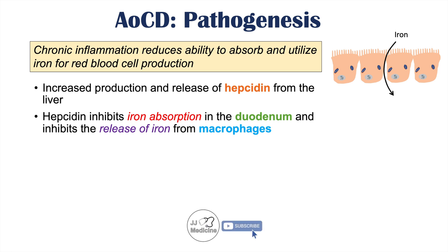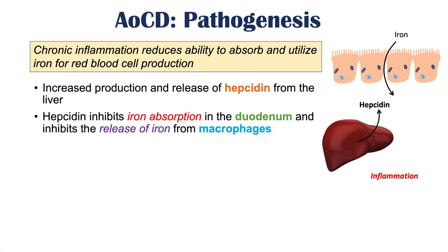Normally, iron is absorbed by enterocytes and brought into the blood. The liver produces hepcidin to regulate iron absorption and metabolism. But in patients with chronic inflammatory conditions, inflammation increases the production and release of hepcidin from the liver, which then inhibits iron absorption from the duodenum and the release of iron from macrophages, causing iron to become trapped within macrophages. Because of these two mechanisms, there won't be enough iron available for red blood cell production, since iron makes up the structure of hemoglobin.